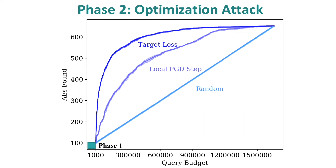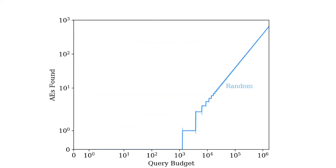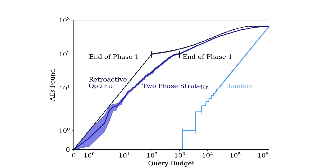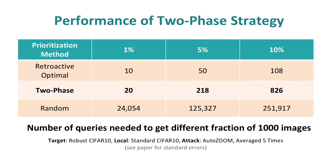So the best prioritization strategy is to use local attack iterations in phase one and loss function value in phase two — we call it the two-phase strategy. When the two phases are combined, this is the performance with randomly ordered images. We also show an ideal retroactive strategy where seeds are prioritized by their actual query costs, serving as an upper bound. Our two-phase strategy is much better than the random one and very close to the retroactive optimal one. Quantitatively, to attack different fractions of 1,000 images, our two-phase strategy's cost is close to the retroactive optimal and orders of magnitude smaller than the random strategy.